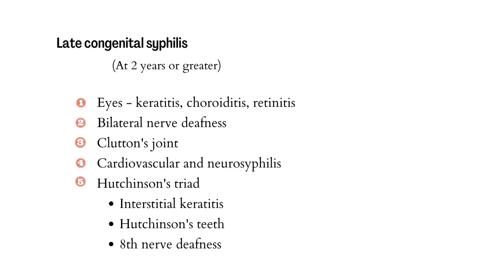Late congenital syphilis occurs in children at two years of age or older. It presents with keratitis, choroiditis, and retinitis in the eyes. We can also find bilateral nerve deafness and Clutton's joint, which is a recurrent arthropathy with painless effusion in the knees. Cardiovascular and neurosyphilis features such as general paralysis of the insane can also present in late congenital syphilis.